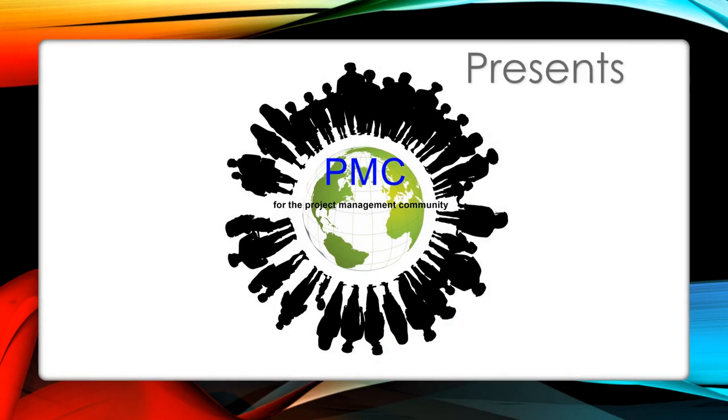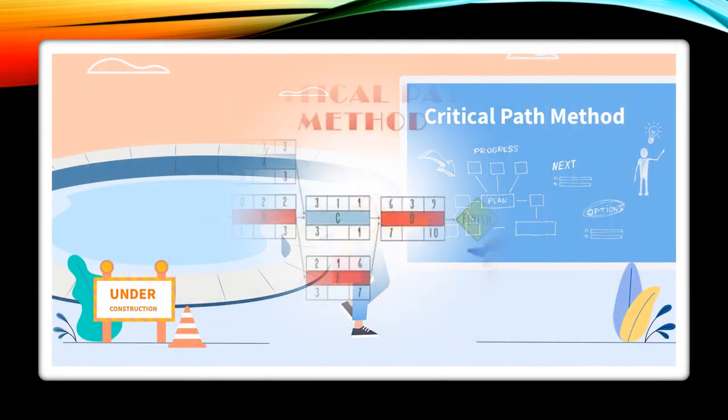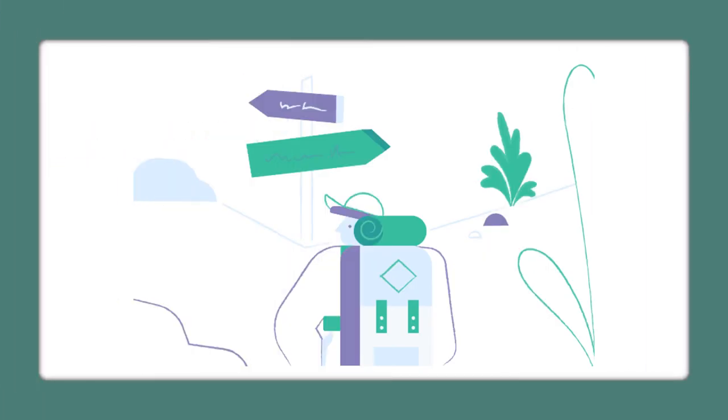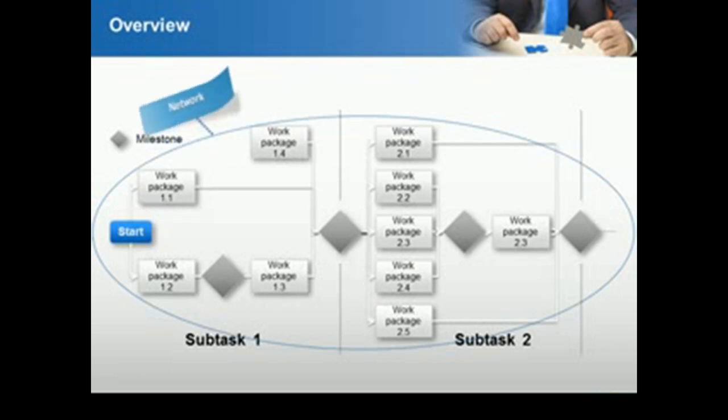In project management, the critical path is the longest sequence of tasks that must be completed to successfully conclude a project from start to finish. The tasks on the critical path are known as critical activities because if they're delayed, the whole project will be delayed.